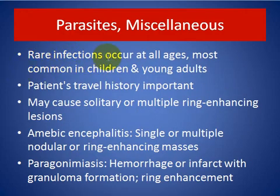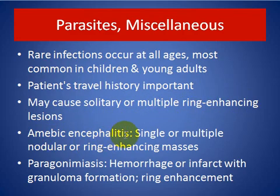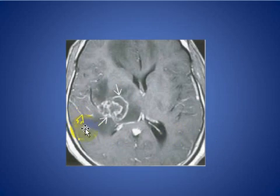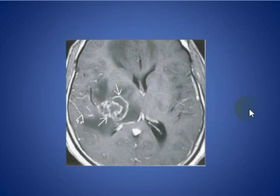Miscellaneous: amoebic/parasitic severe infection occurs at all ages, most common in children and young adults; travel history is important. Can present as solitary or multiple ring-enhancing lesions, encephalitis, singular or multiple nodular or ring-enhancing masses, hemorrhage or infarction with granuloma formation and ring enhancement. Here is a T1 MRI with a ring-enhancing mass with leptomeningeal enhancement in a patient with amoebic meningoencephalitis, confirmed at biopsy.